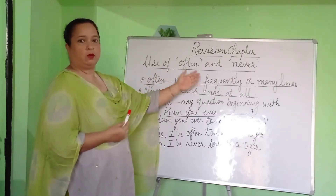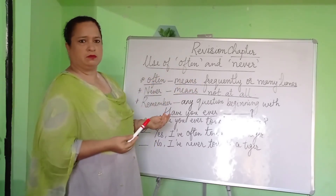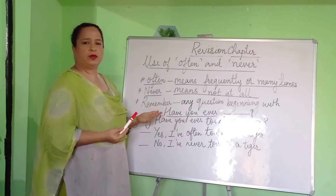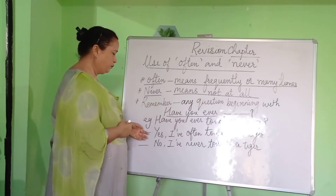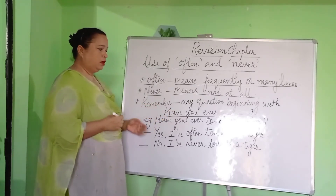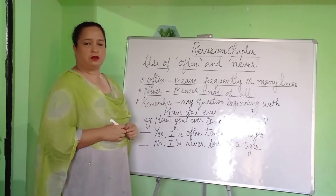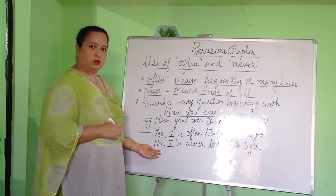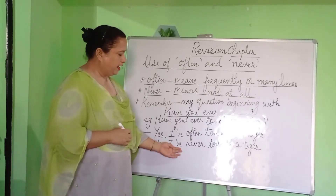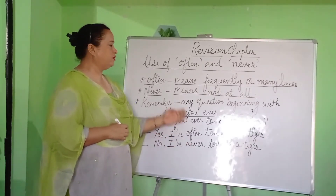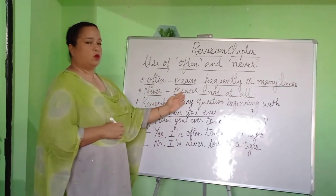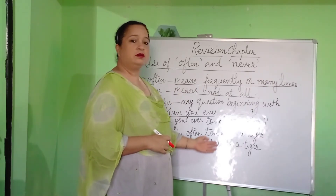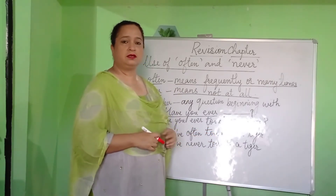Yes, I have often touched a tiger. That means frequently or many times — you have been to the zoo maybe six times a month, and each time you went, you touched a tiger. Now, if you have never ever touched a tiger, you begin your answer using No. No, I have never touched a tiger. Never means not at all.